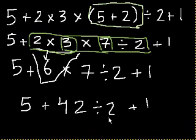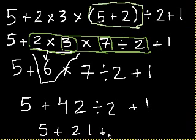And now all we have left is the division, because once again, we do the division before addition and subtraction. So what's 42 divided by 2? It's 21.